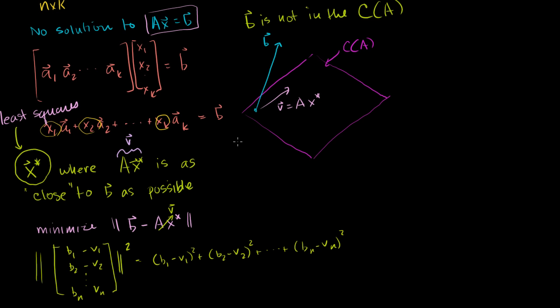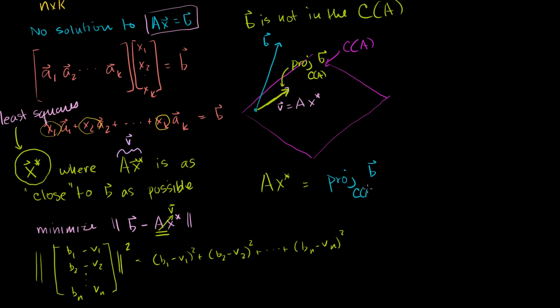There is no solution to this. But maybe we can find some x star where A times x star is clearly in the column space, and I want this vector to be as close to b as possible. We've already seen in several videos: what is the closest vector in any subspace to a vector that's not in that subspace? The closest vector is the projection. The closest vector to b that's in my subspace is going to be the projection of b onto my column space.